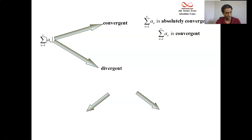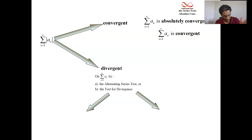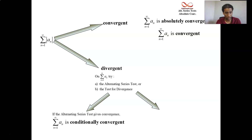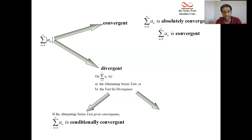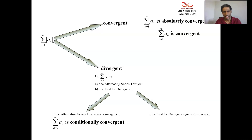But when the absolute value series diverges, the story's not over. You want to try the alternating series test on the original series when the negatives are in there. If that gives you convergence, then that's conditional convergence. Now if the alternating series test doesn't work, there's probably another test behind the scenes — the test for divergence. And if that works on the original series, then that's just divergence.